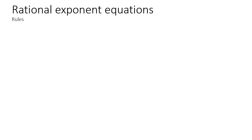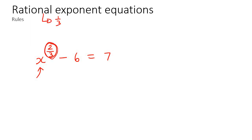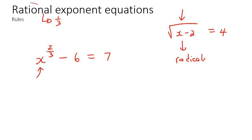In this lesson, we are going to be looking at rational exponent equations. Some students get confused with what a rational exponent equation is. For example, it's like x to the power of 2 over 3 minus 6 equals 7. The variable has a rational — think of it as a fraction — exponent. Some students confuse these with radical equations, where you have a root symbol, but those are different.